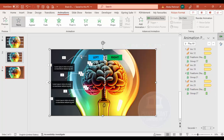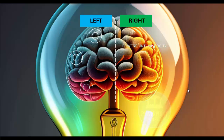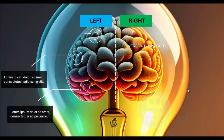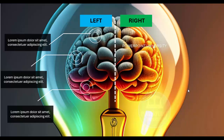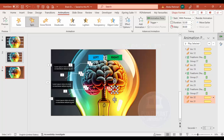The final result shows options appearing one by one as the brain rotates. The first option comes in, the arches rotate, then the next option appears, and so on. You can copy, paste, and use Ctrl+D to add all six options to both left and right sides. You can customize the text, colors, and even the background image according to your own requirements.